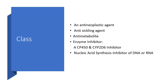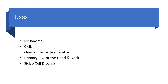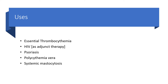Hydroxyurea belongs to the class of medications known as antineoplastic agents, anticycline agents, and is used in sickle cell disease patients as an anti-metabolite. It inhibits cytochrome P450 enzymes, particularly CYP2, and plays a role in nucleic acid synthesis affecting DNA and RNA. Uses include melanoma, myelocytic leukemia, inoperable ovarian cancer, primary squamous cell carcinoma of the head and neck, and sickle cell disease.